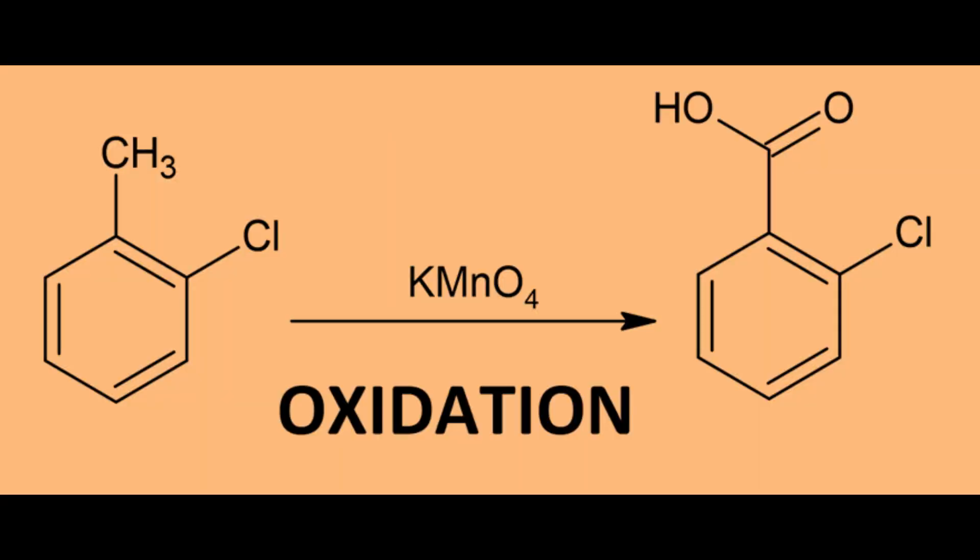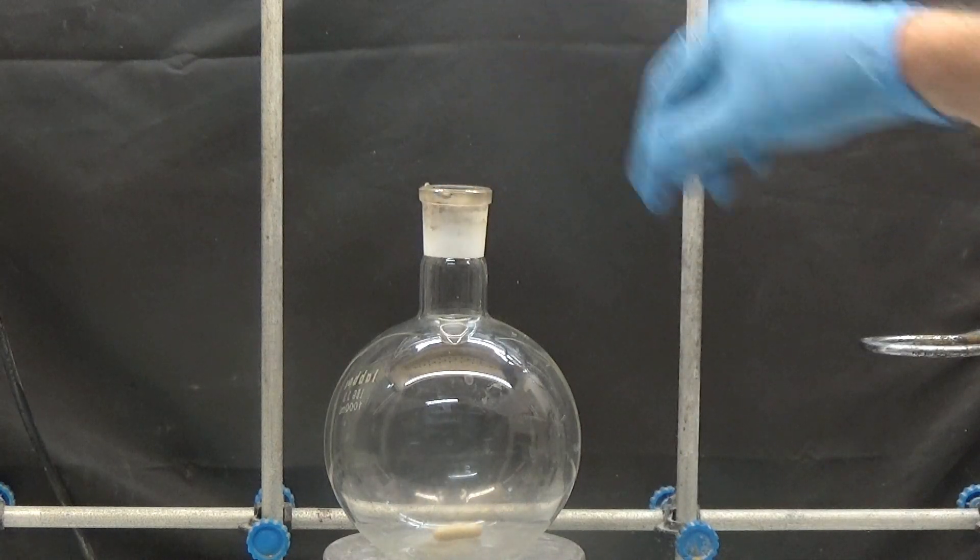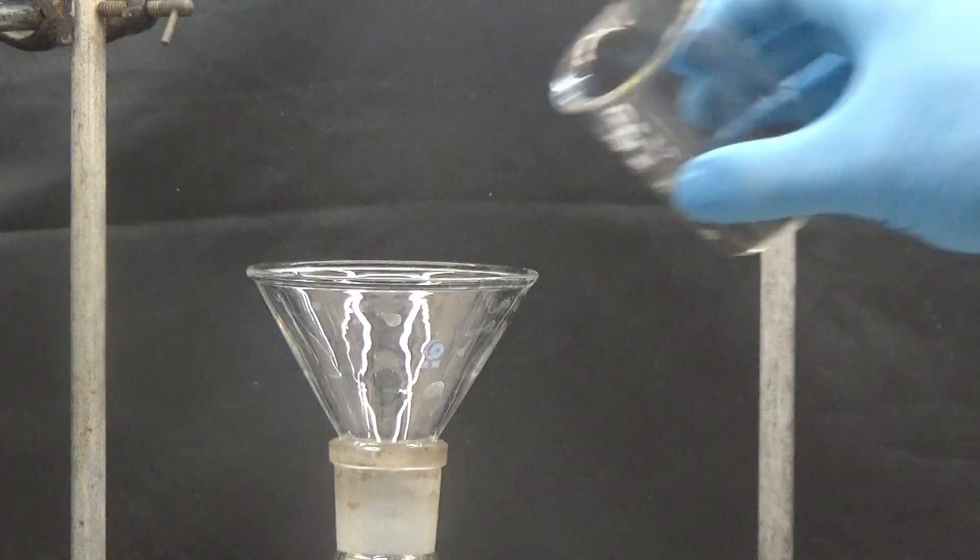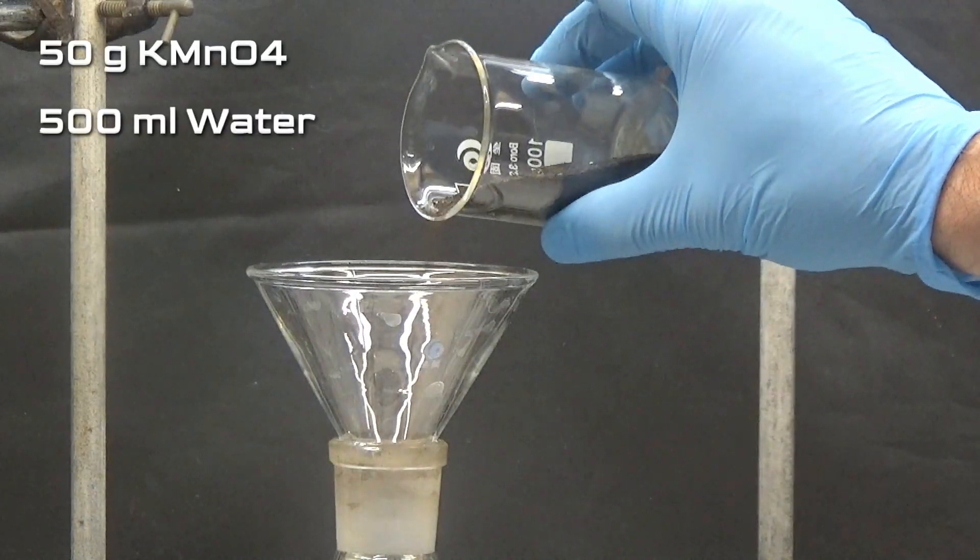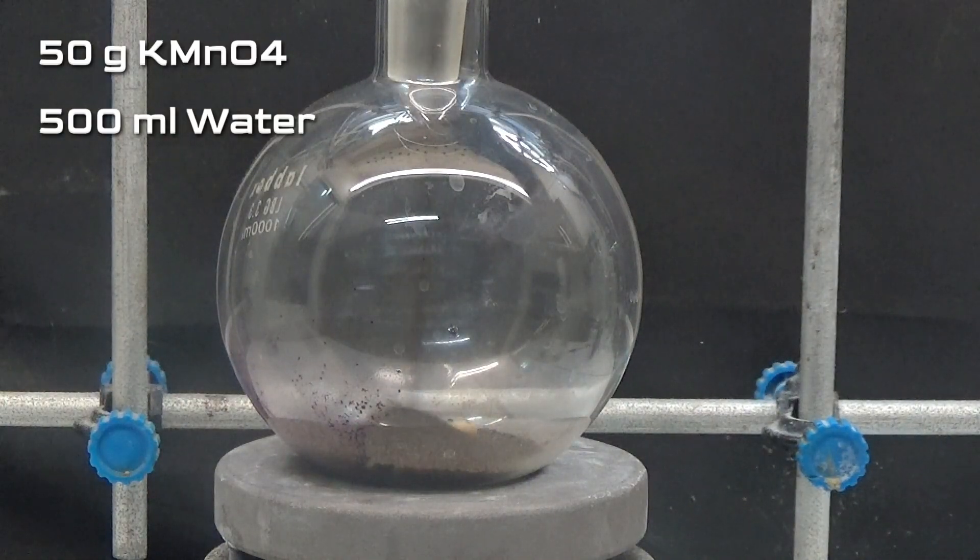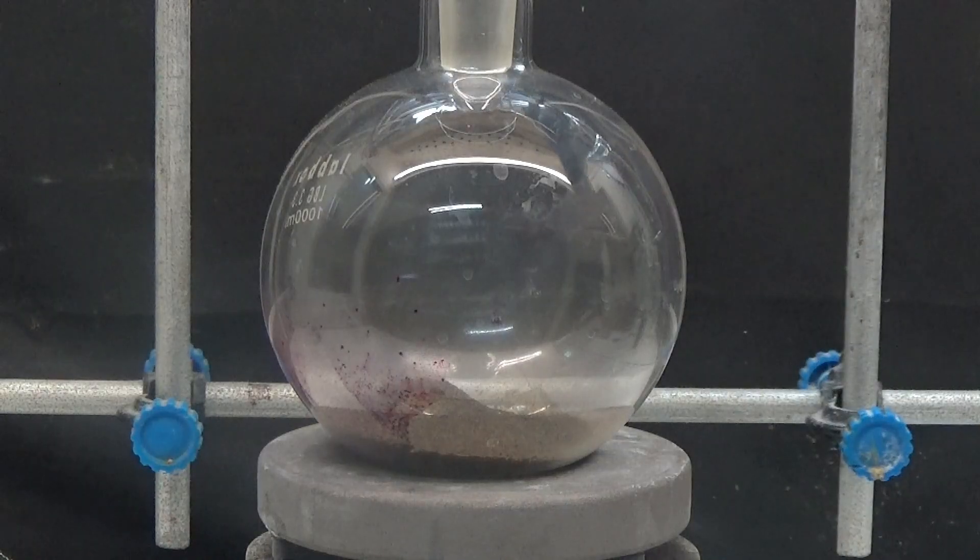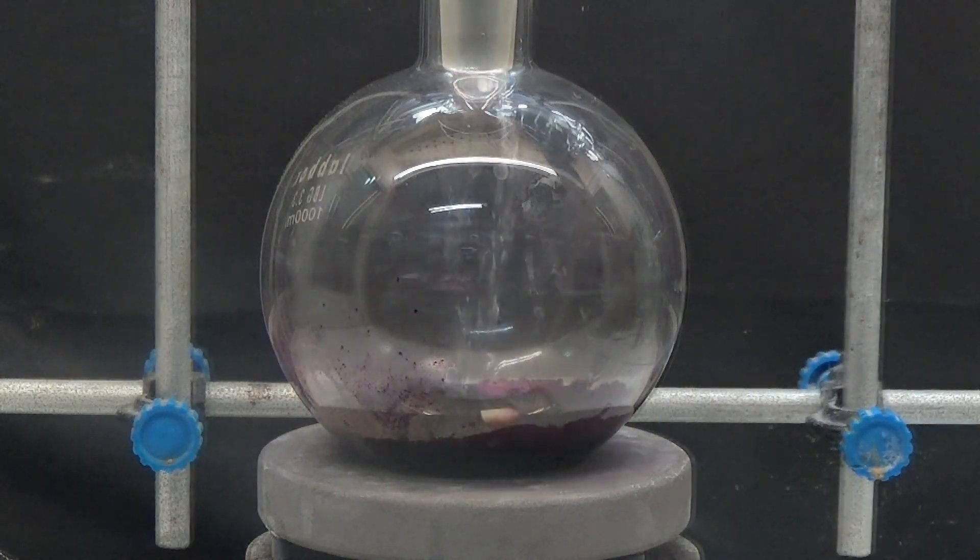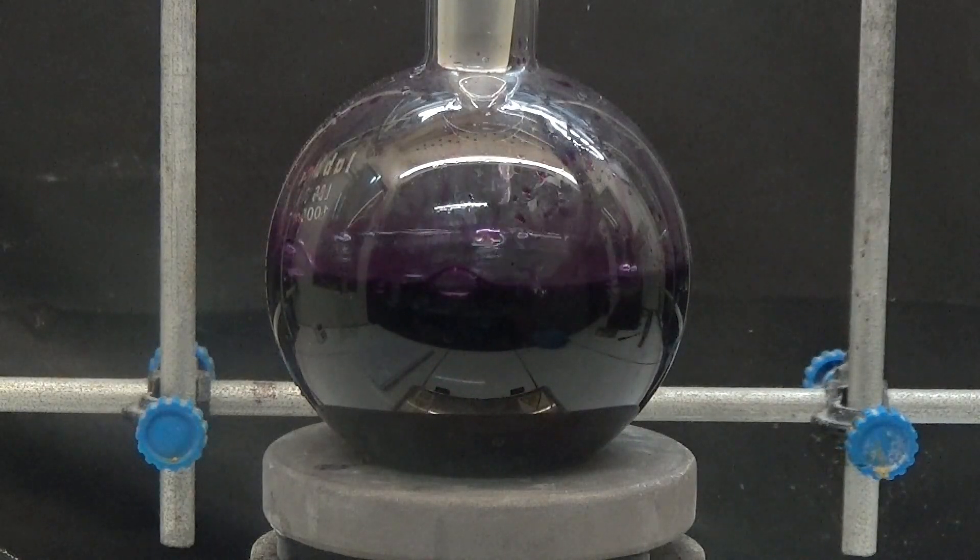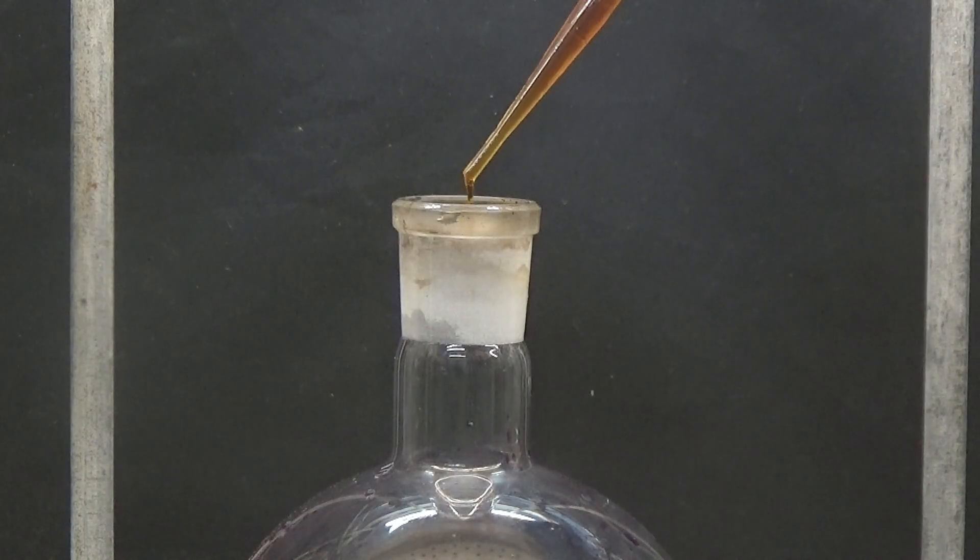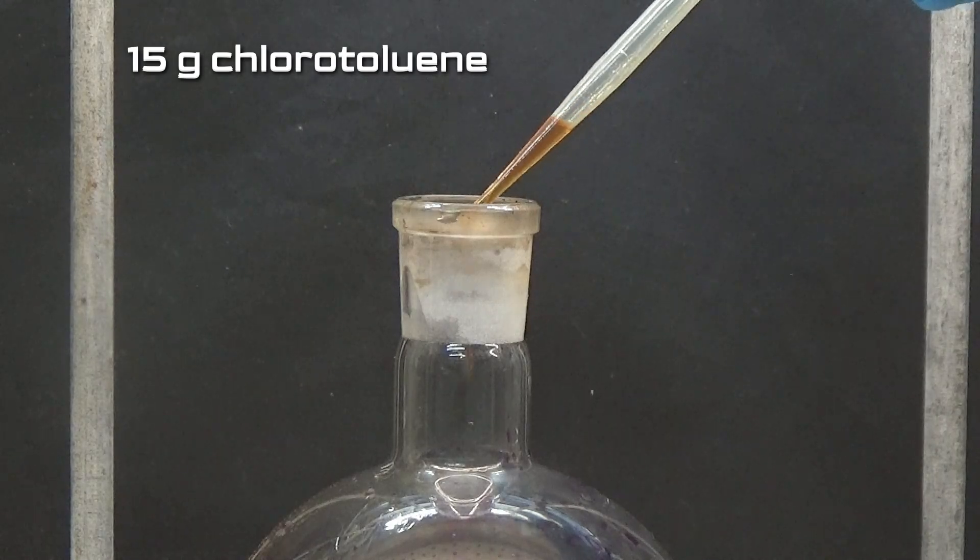In the following process we are going to oxidize the methyl group to carboxyl. For the oxidation we will use potassium permanganate. In a 1000 milliliters flask we put 50 grams of potassium permanganate and 500 milliliters of water. Add slowly and with agitation 15 grams of chlorotoluene.